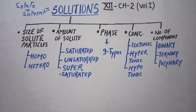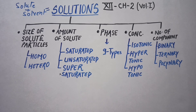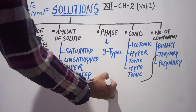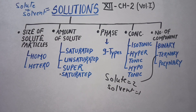The fifth category is based on number of components, divided into three: binary, ternary, and polynary. Binary means one solute and one solvent — for example, sugar with water. Ternary means one solvent and two solutes — for example, ORS solution.